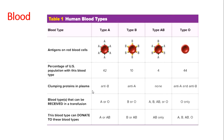Everyone has red blood cells; however, different people have different proteins on the surface of their red blood cells. Scientists classify these proteins into groups called blood types. People with A proteins have type A blood, people with B proteins have type B blood, some people have both A and B proteins and have type AB blood, and people with type O blood have neither A nor B proteins on their red blood cells.